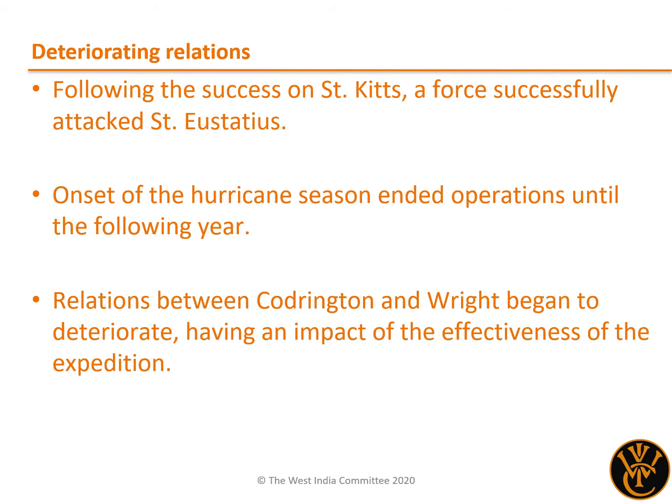Following the great success on St Kitts, Thornhill, in command of 350 men from both the local forces and Bolton's regiment, successfully managed to recapture the island of St Eustatius for their Dutch allies in the space of four days. This was a welcome final victory before the onset of the hurricane season. Later in the year, an attack on Guadeloupe was abandoned due to a lack of supplies, sickness of the troops, the reluctance of the West Indian militias to participate unless they got a full share of the plunder, and most importantly, deteriorating relations between Codrington and Wright. Thus the next offensive operation did not take place until the following year.